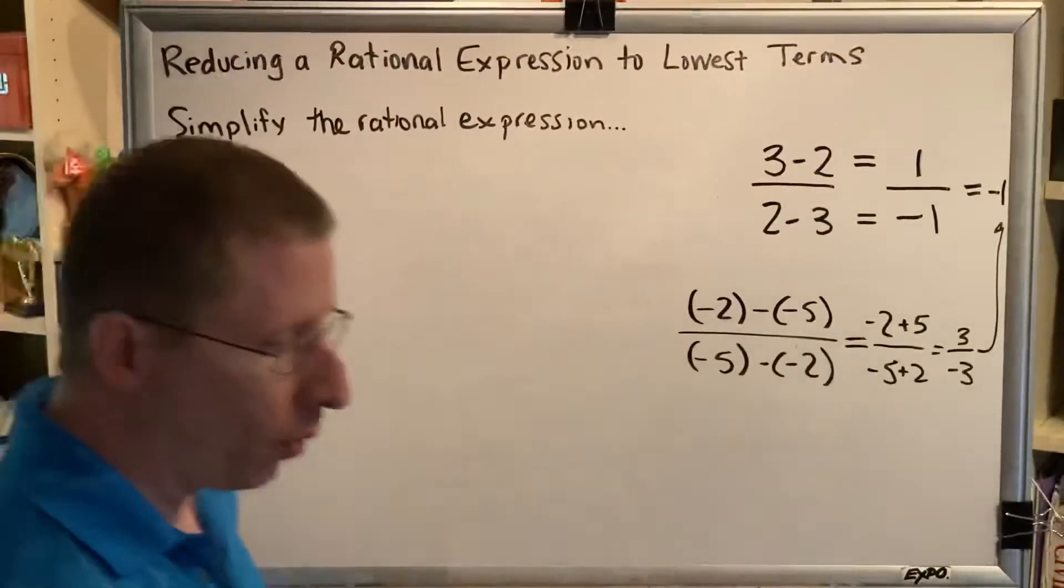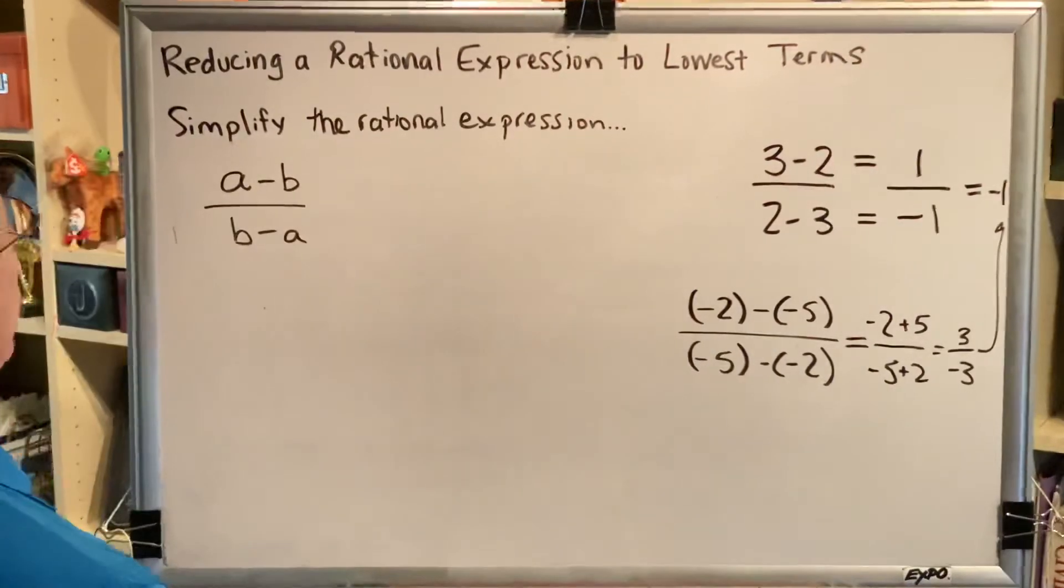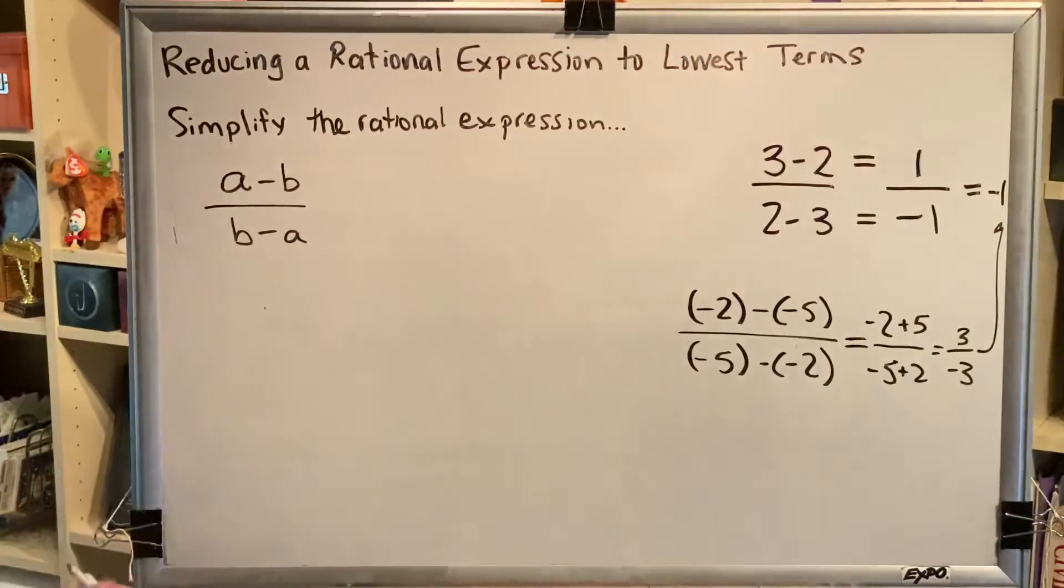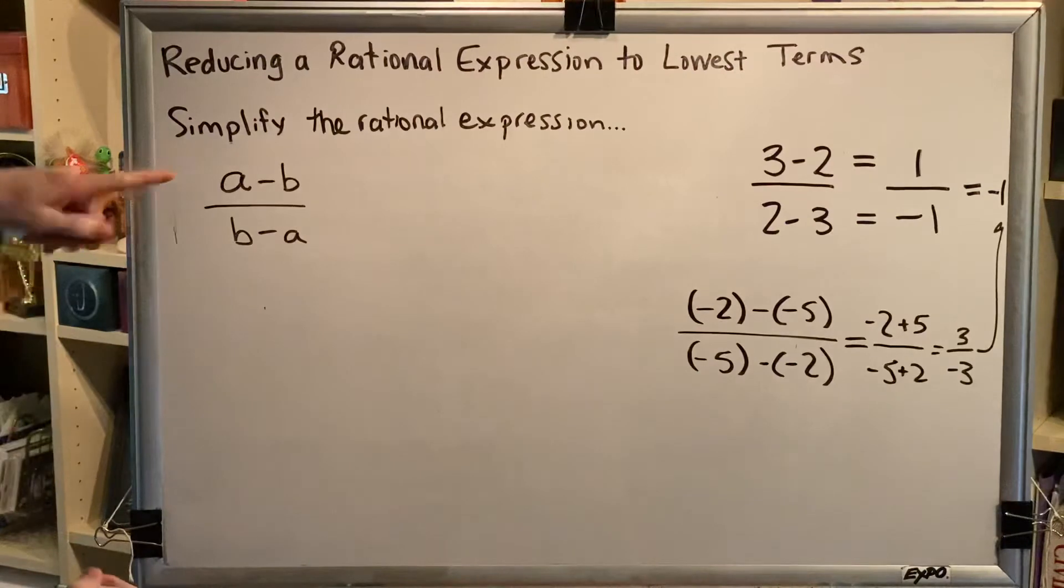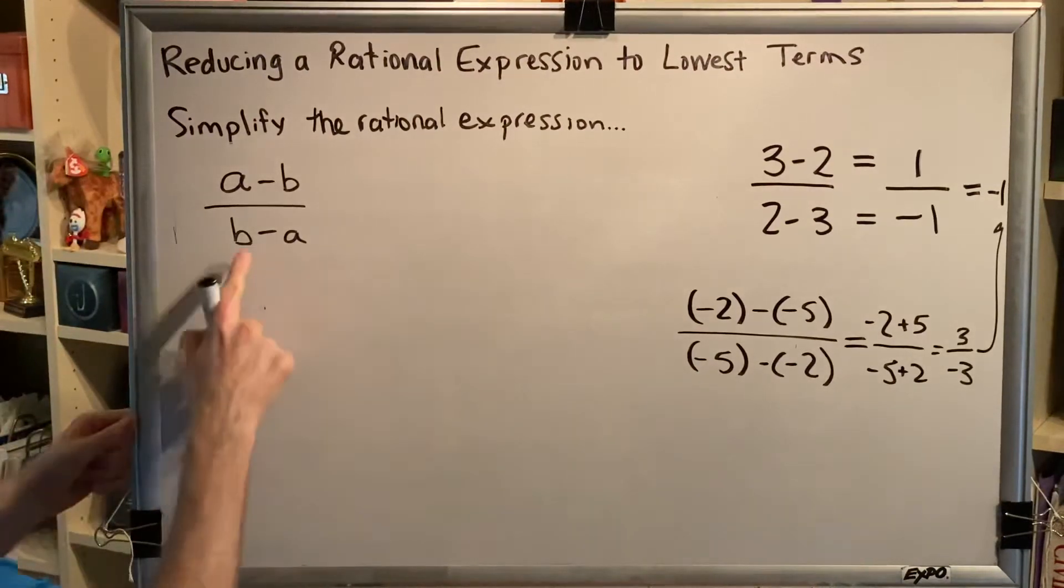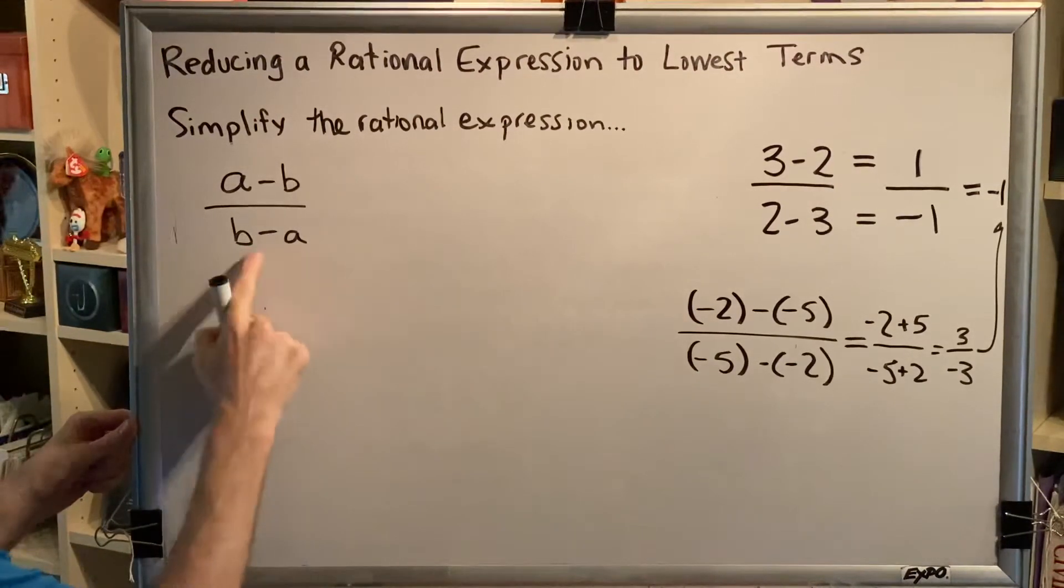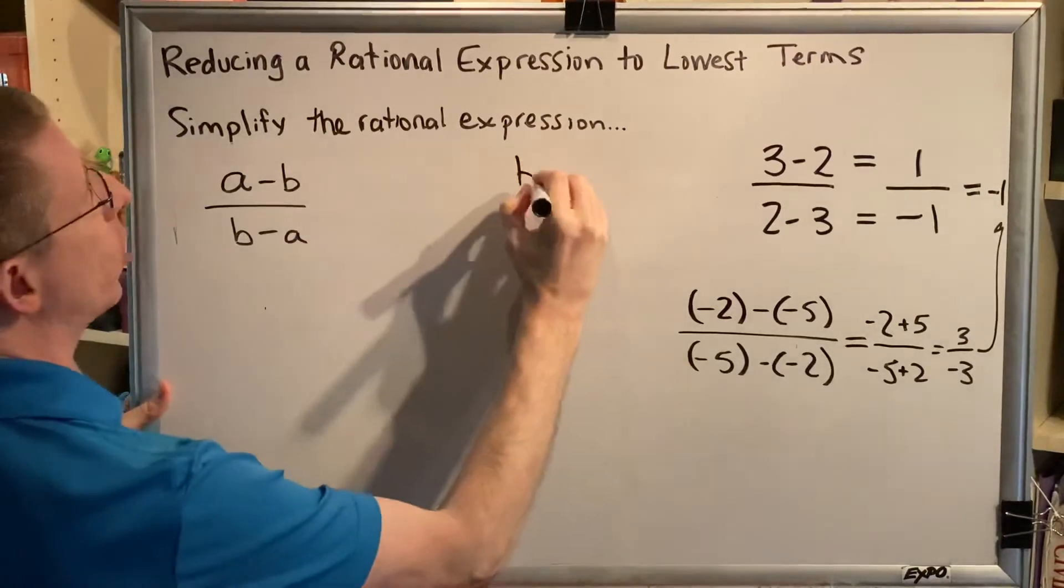Alright, so now that we know that we're going to get the answer negative 1, how do we use algebra to prove it? And the answer is by factoring. We're going to leave the a minus b alone, but we're going to factor a negative 1 out of this b minus a. Let me show you what I mean.